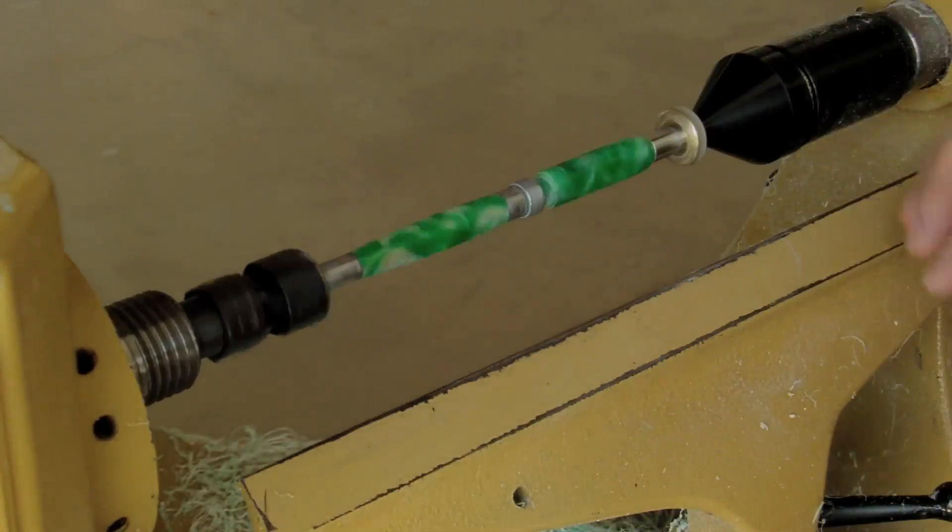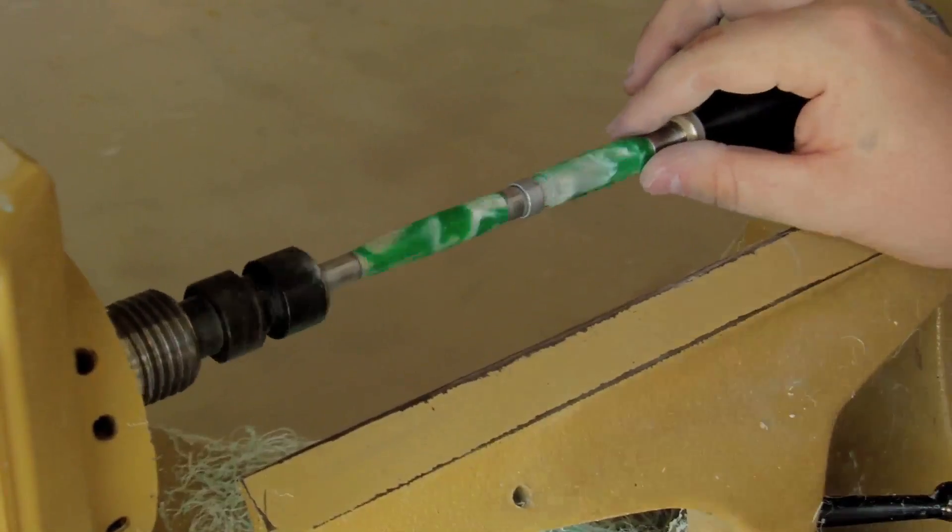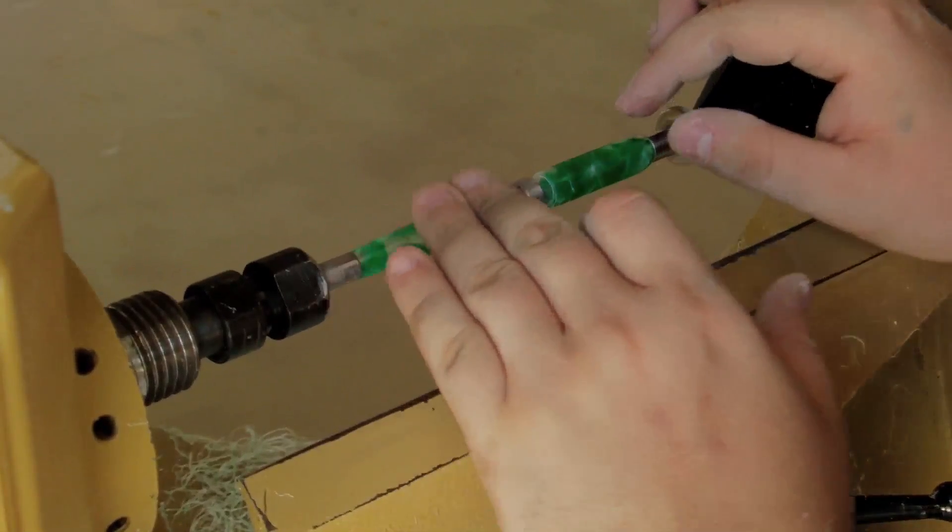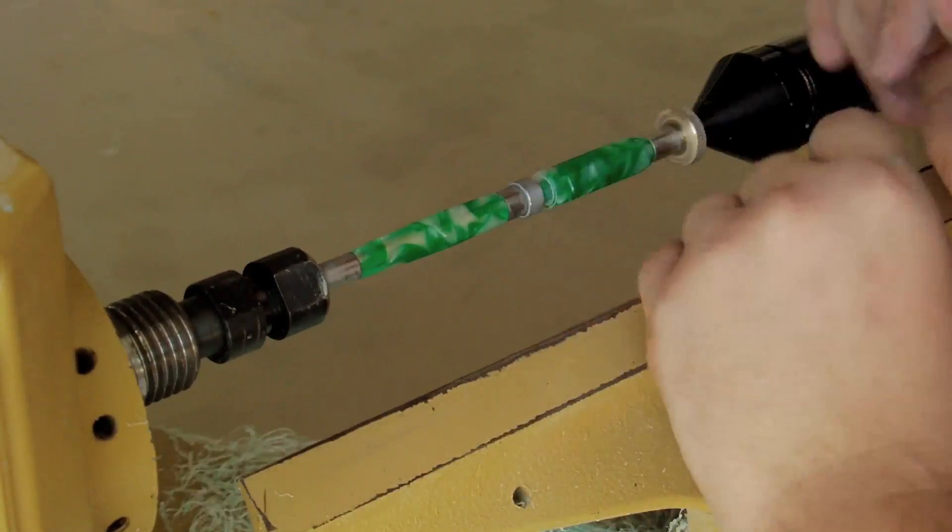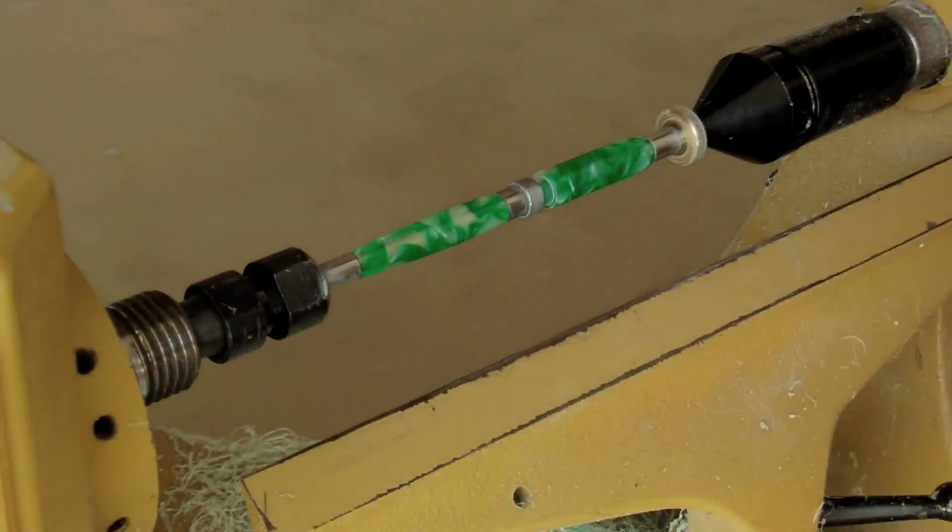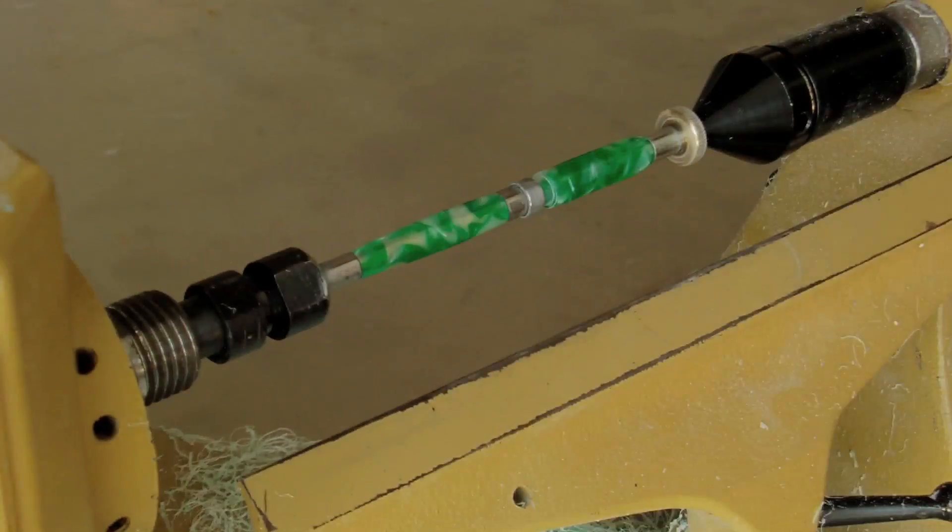Now that we're done with all the sanding we actually turn off the lathe here. You'll see it's very very shiny and very smooth. There's no actual scratches on there. So at this point here we're actually ready to take the pen off of the mandrel.